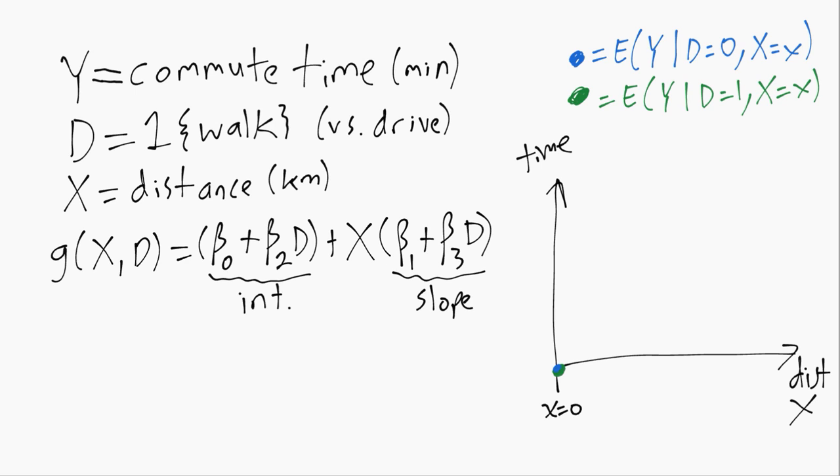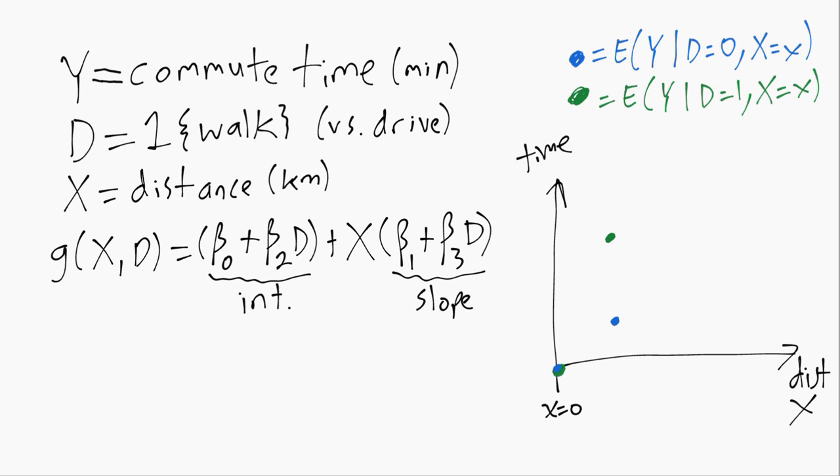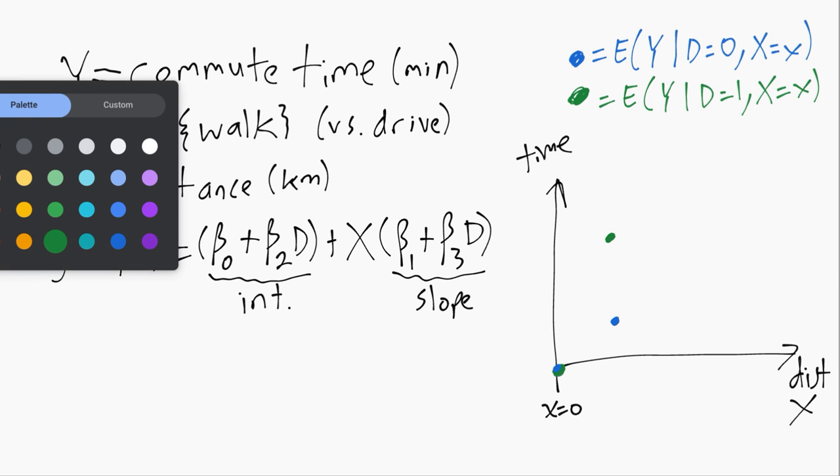So maybe we would get something like this for the driver and something slower for the walker. And then if we think about going a second kilometer or a third kilometer, if you think about someone who just lives in the suburbs, maybe the first kilometer near their home, there's probably a lot of stop signs and low speed limits. Once they get past a kilometer or two kilometers, they get to more major roads with fewer stop signs and higher speed limits.